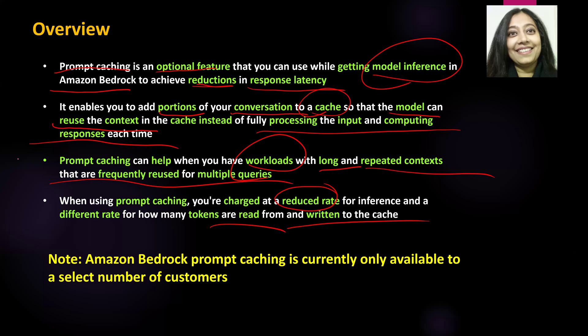Not everything can be cached. For a prompt to be cached, it has to be long enough and it has to be repeated multiple times — meaning it has to be something that is frequently used. Also, when you use prompt caching, you are charged at a reduced rate for the inference the model has generated, and at a different rate for how many tokens were read or written to the cache.